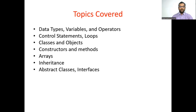Interfaces are also similar to classes, but the only difference is that classes have implemented methods whereas in interfaces the methods are not implemented. Those methods are called abstract methods. A class which consists of at least one abstract method is called an abstract class.